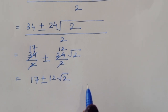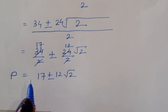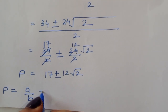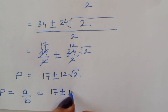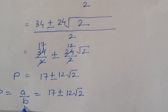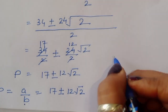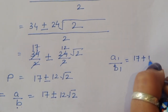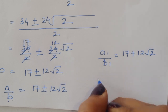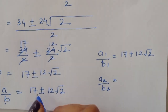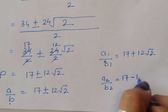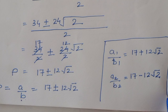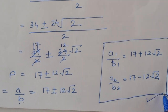This is the value of p, and we already defined p as equal to a upon b. So a upon b equals 17 plus or minus 12 root 2. We get two values: a1 upon b1 equals 17 plus 12 root 2, and a2 upon b2 equals 17 minus 12 root 2. These are the two values of a upon b. This is the solution. Thank you.